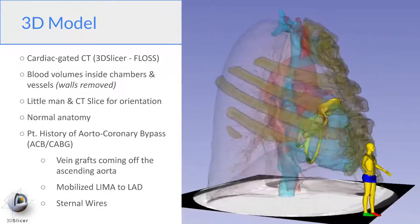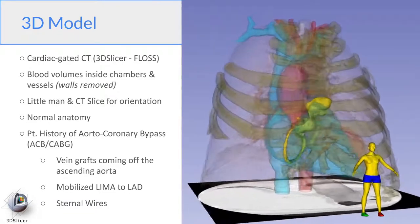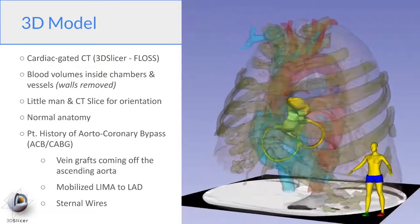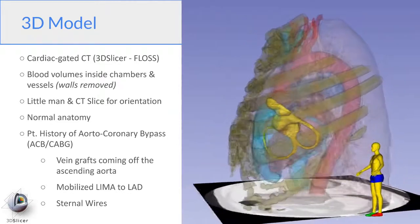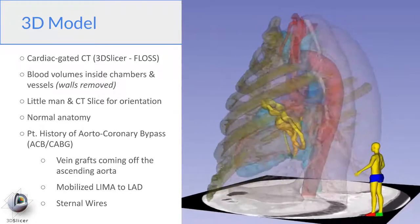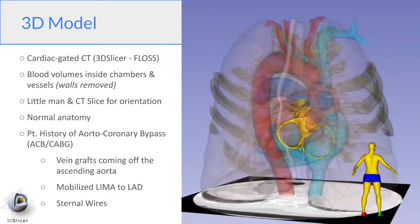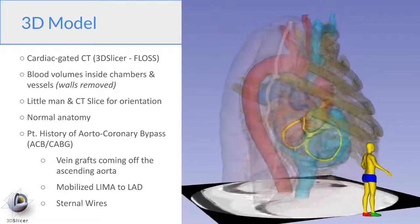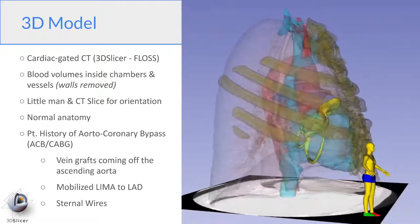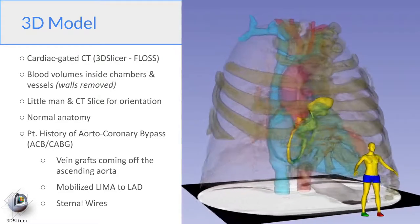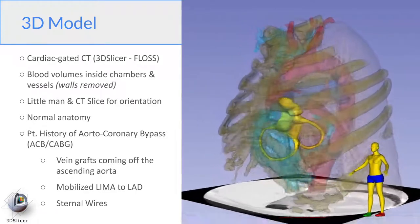This heart has generally normal anatomy, but this patient did have a previous heart surgery for aortocoronary bypass grafting or CABG. And if you look closely, you can actually see some of the saphenous vein grafts coming off the ascending aorta and part of the mobilized LIMA that was grafted to his LAD. He also has sternal wires that I'll make visible in some of the views that'll help us locate where the sternum is more easily.